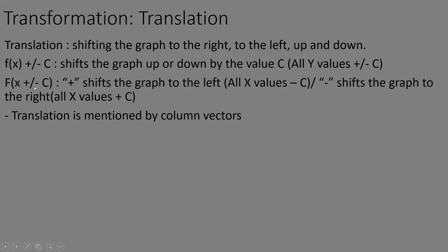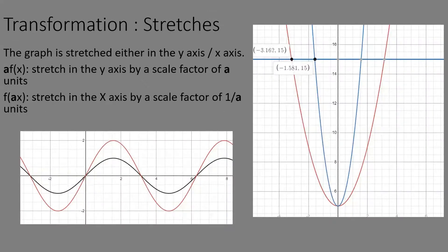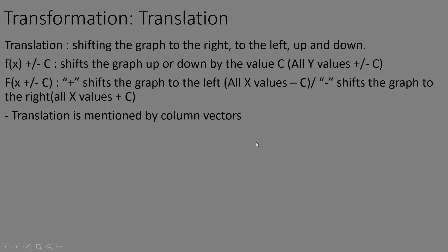For horizontal translation, c is inside the brackets of the function: f(x plus c) or f(x minus c). If it's plus c inside, the graph shifts to the left — all x values decrease by c. If it's minus c inside, the graph shifts to the right — all x values increase by c.